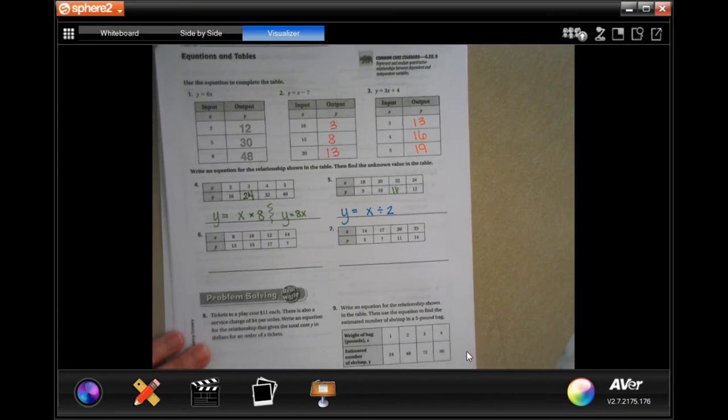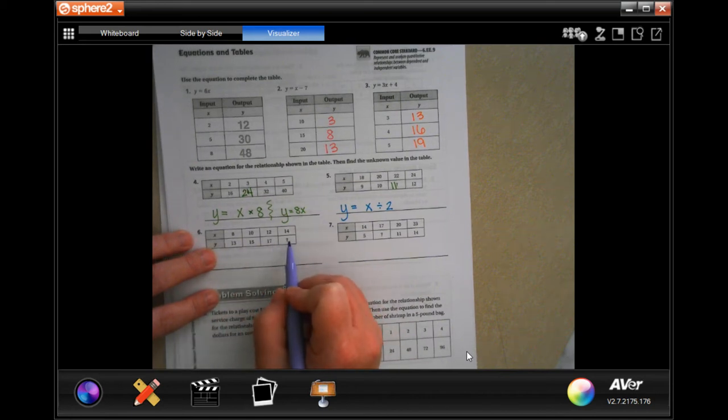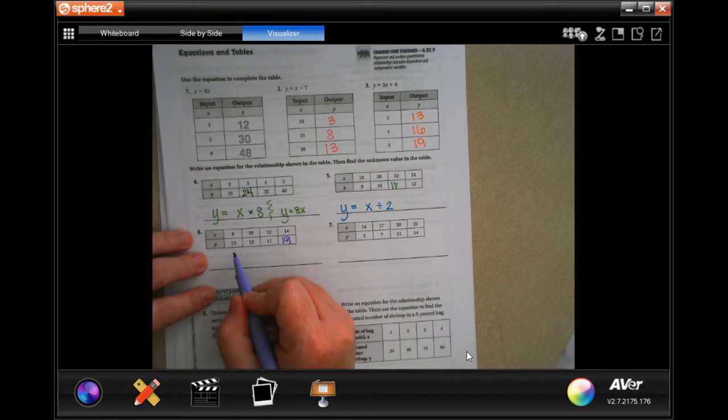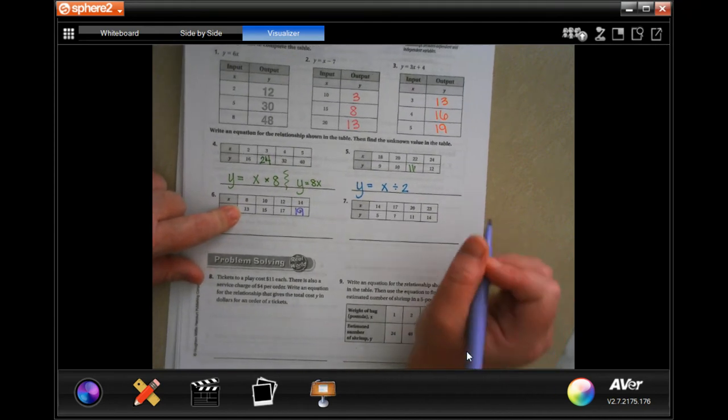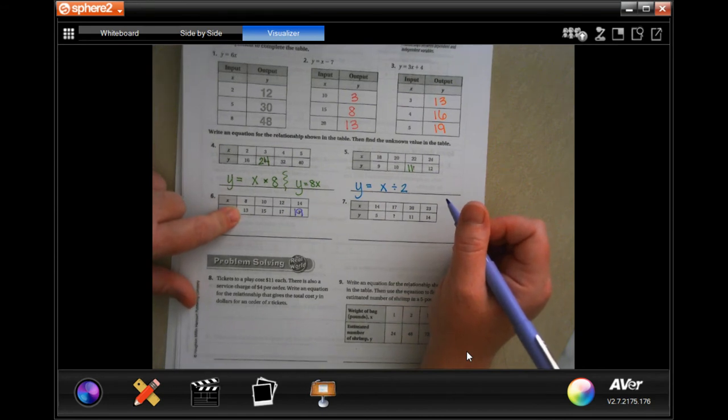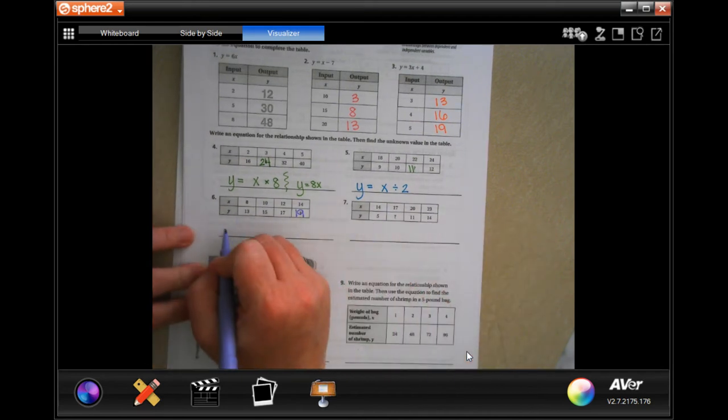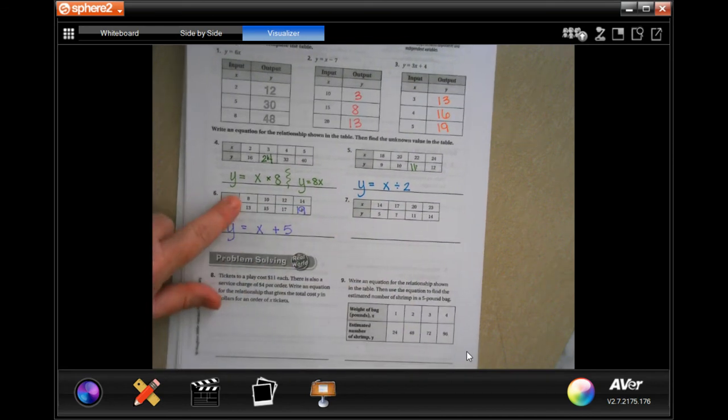All right so number 6, 13 to 15, well how do I get from 13 to 15? I add 2. So if I add 2 to 15 do I get 17? Yes. So I'm going to add 2 again and I'm going to get 19. Now how do I get from x to y? Well I can't multiply 8 and get 13, I mean I can but it's going to be a decimal or fraction. So if I add 5 I get from 8 to 13. So if I add 5 to 10 do I get 15? Yes. If I add 5 to 12 do I get 17? Yes. So we're going to say y equals x plus 5. All we did was add 5 to x to get y.